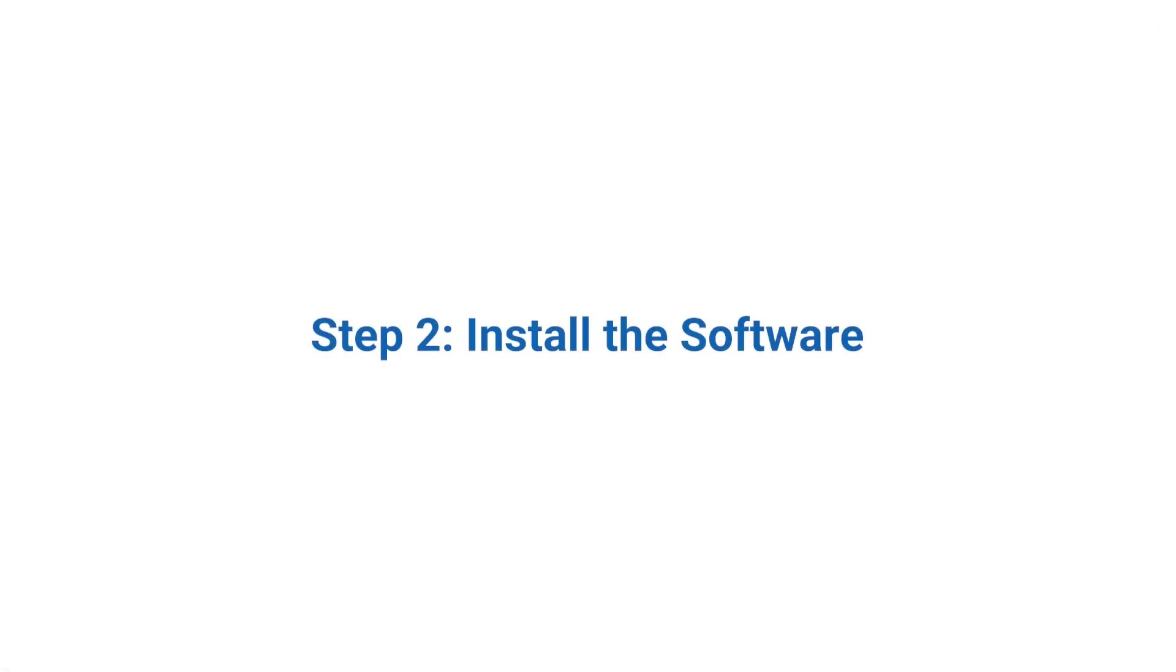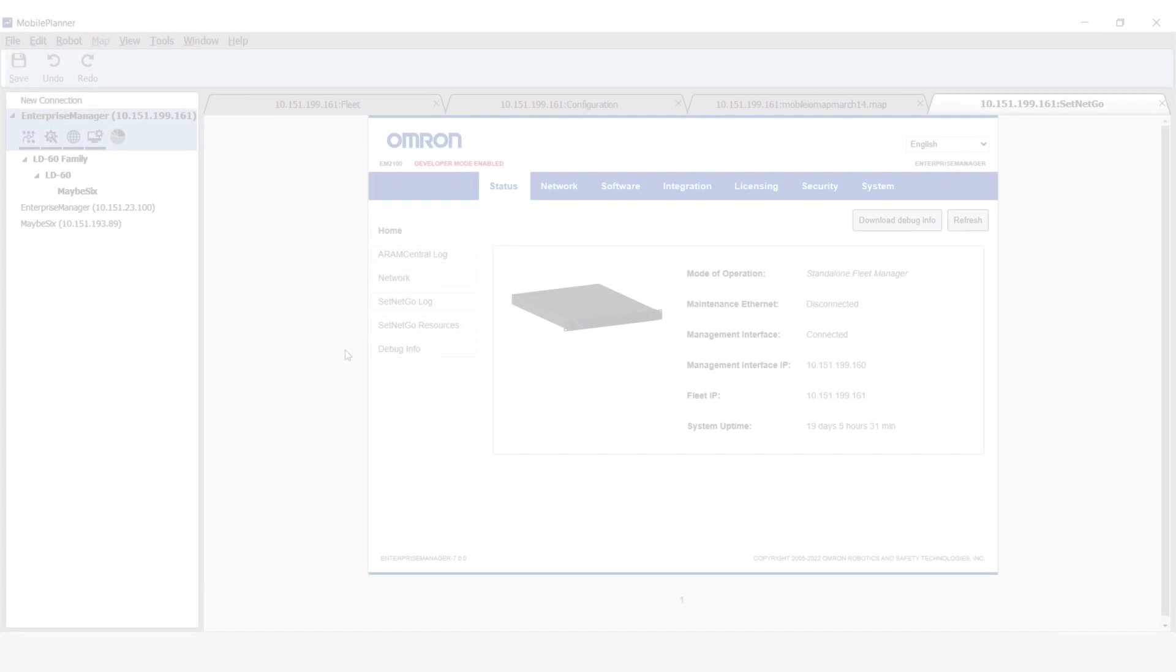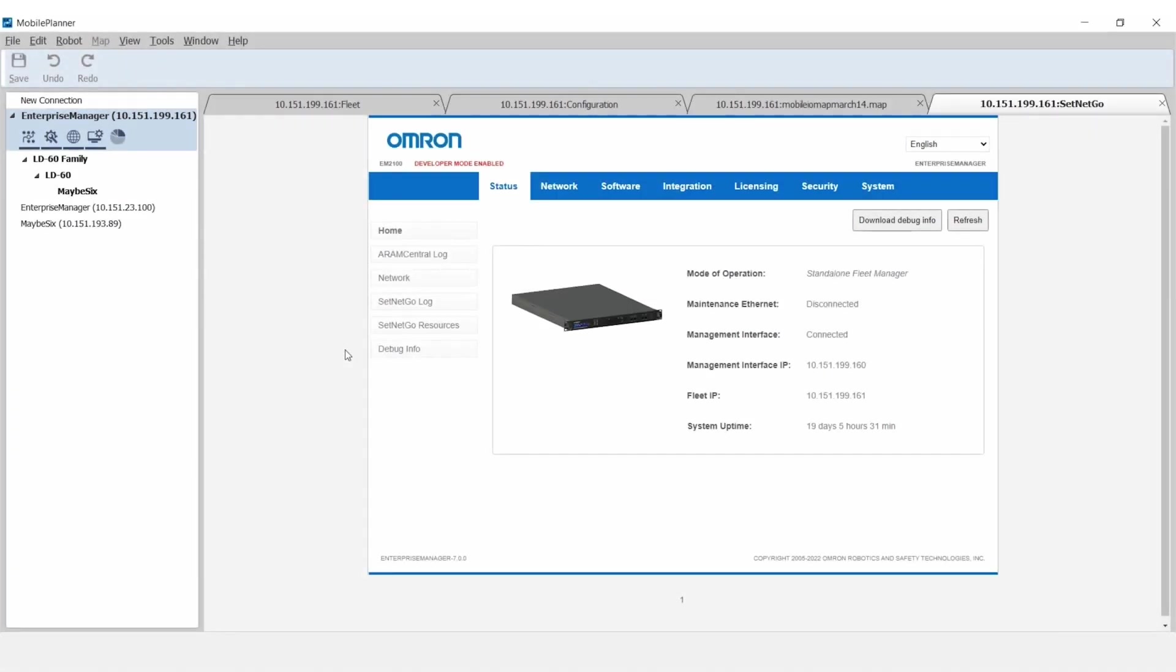Step 2. Install the software. The configuration for the Mobile I.O. Box consists of several steps. First, ensure the required software is installed and active. The Mobile I.O. Box must be installed to use a Mobile I.O. Box.